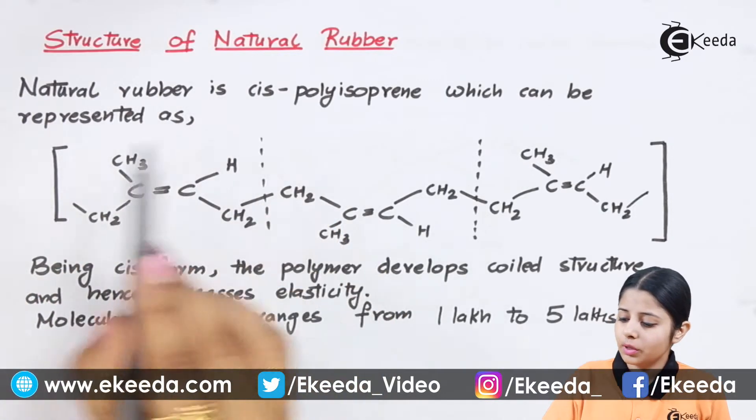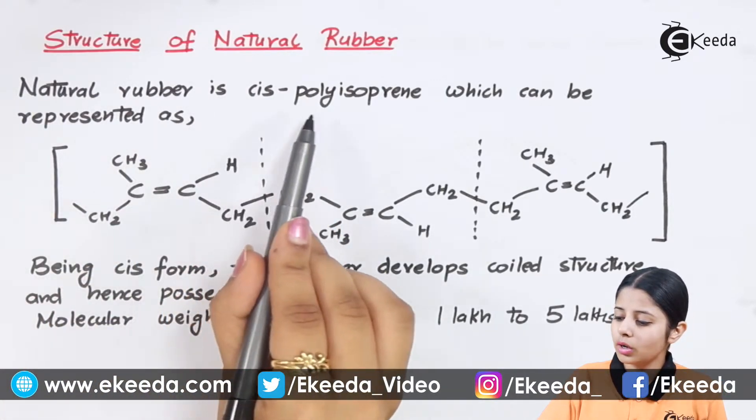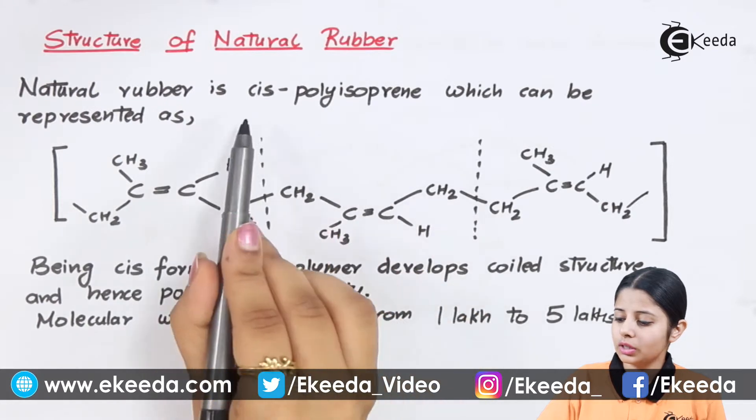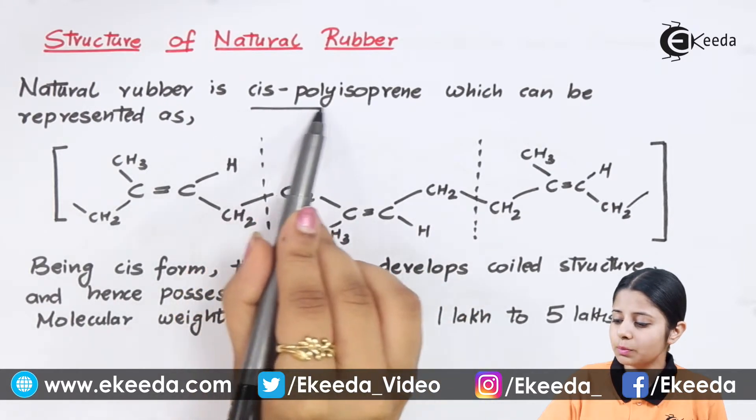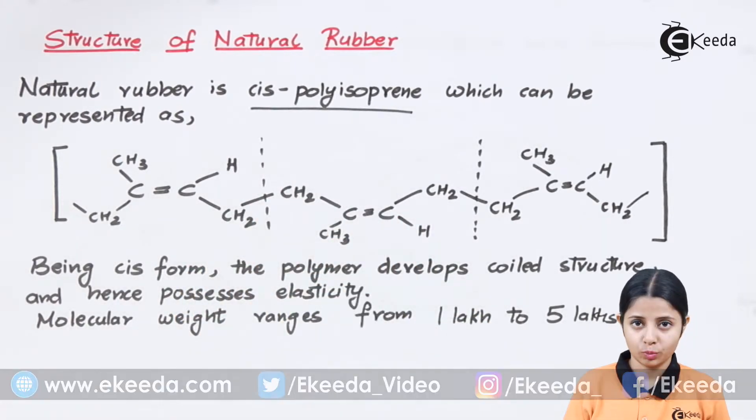Structure of natural rubber. Natural rubber is cis polyisoprene. Let me explain what cis polyisoprene means.